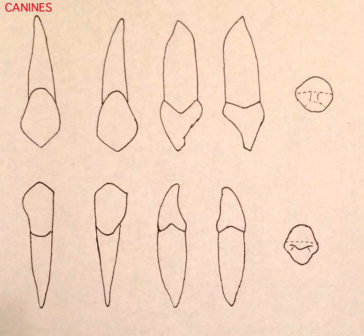Hey everyone, this is Ryan, and I'm going to talk a little bit about the canine teeth. Canines have three major functions. The first is for tearing and holding onto food and other material. The second is for aesthetics — they're usually very visible in smiles. And the third is for canine or anterior guidance.